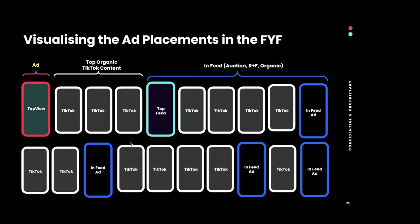98% of time on TikTok is spent in the For You Feed, or FYF. This is where users see videos based on what the recommendation system deems of interest to them, and it's where your ads will show up. Ads are broken up by several organic TikTok videos, with seven videos on average between ads. The reason ads are surrounded by organic videos is so as not to disrupt the user's scrolling experience. We ideally want users to not even realize you're making an ad, so try to make content feel as native as possible, rather than conventional TV-style ads.